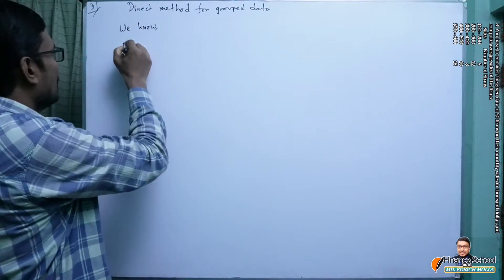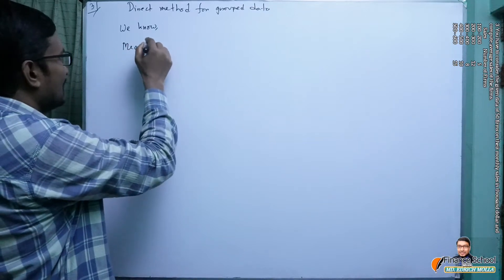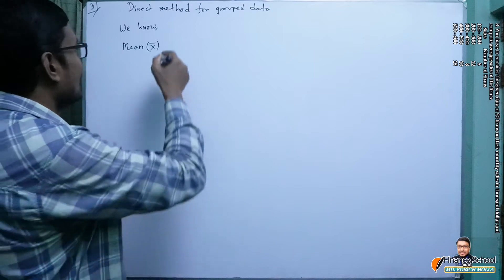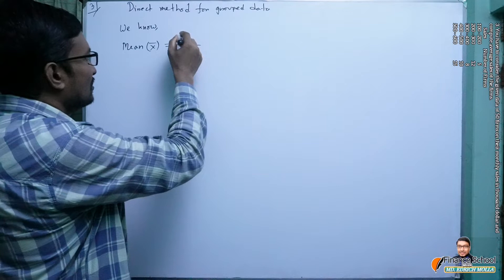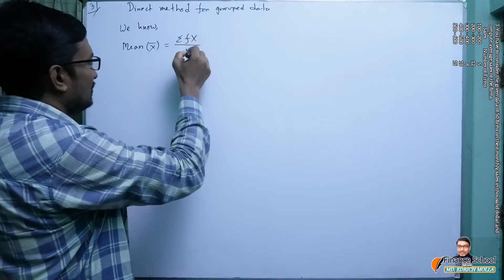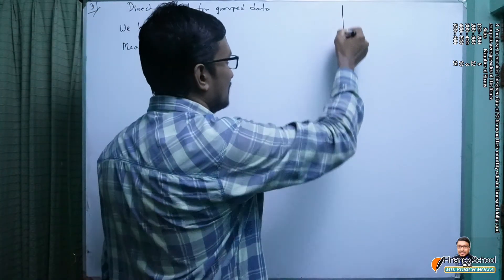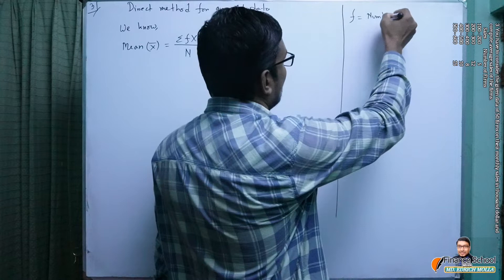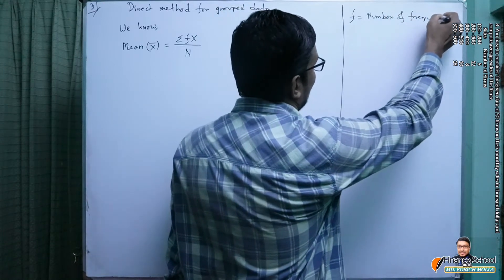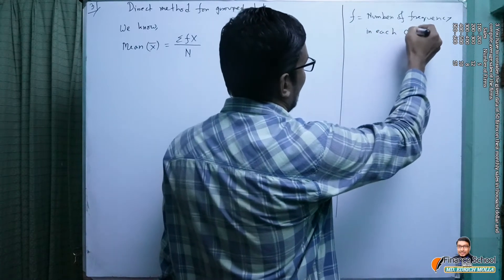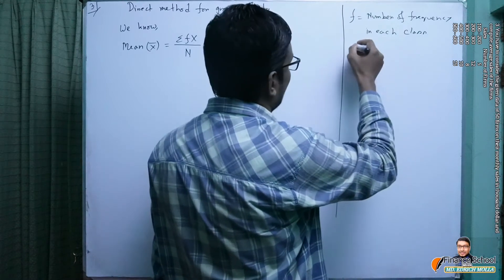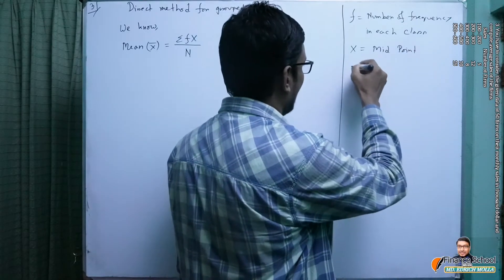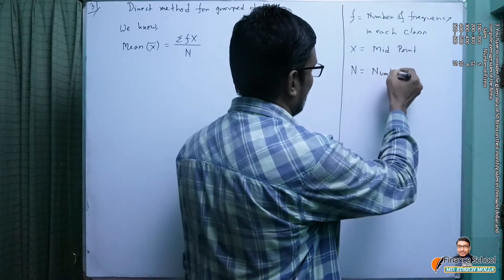We know mean or average, which is symbolically written as x-bar for sample data. For grouped data, we have to use the formula x-bar equals Σfx divided by n. Here, f means frequency of the class, x is called the midpoint, and n is the number of observations.